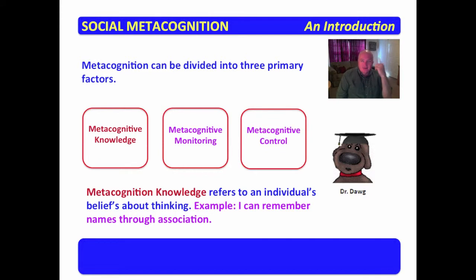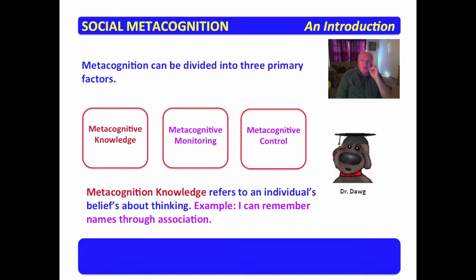When I meet somebody, the first thing I do is ask what do I associate them with? I met a person the other day, real easy to remember his name because I associate it with my cousin's name. Immediately when I met him, I said I know I can remember it if I associate it with something. Be careful what you associate them with, though — you don't want to come up with their name as aardvark or something like that. Metacognitive knowledge refers to an individual's beliefs about thinking.